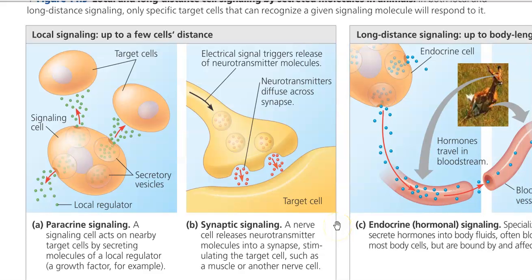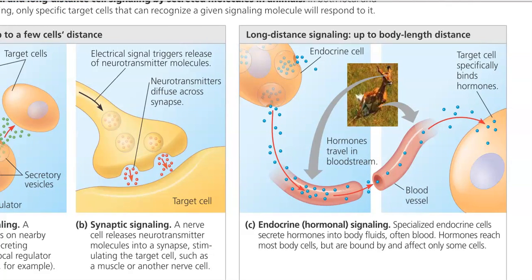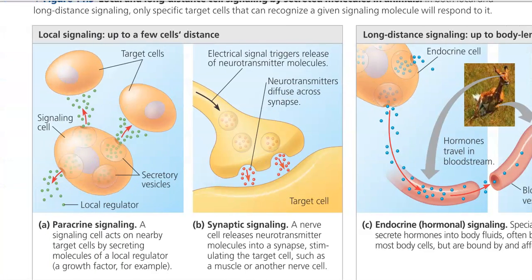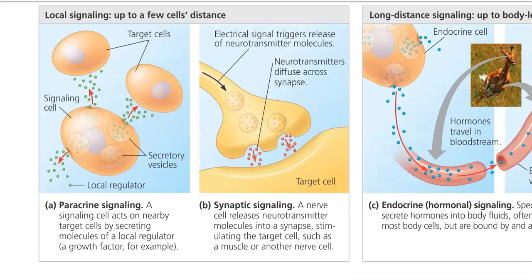The distance between the signal molecule and the receptor plays an important role. The signaling shown on the left-hand side is local signaling — that is, signaling over a short distance — whereas the signaling shown on the right-hand side is long-distance signaling. There are two types of local signaling: paracrine signaling and synaptic signaling.